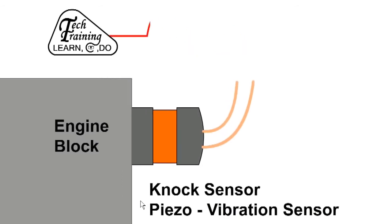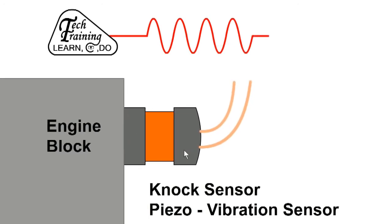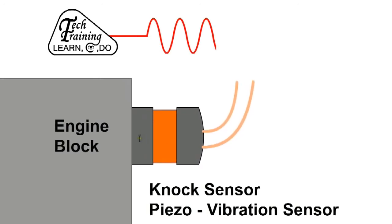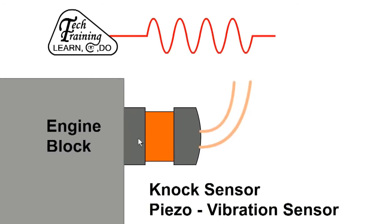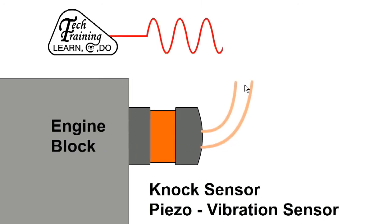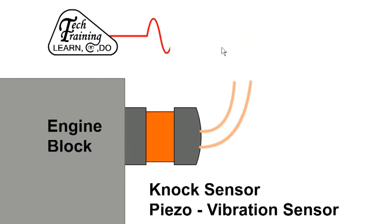The knock sensor allows the ECU to listen to the engine. It is based on a vibration sensor which consists of a piezoelectric element and is attached to the engine block. The energy from the vibrating cylinder block is converted into an electrical signal for the ECU. When the onset of combustion knock is detected, the ECU will make appropriate alterations to the timing.